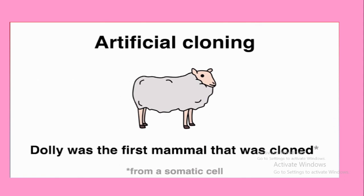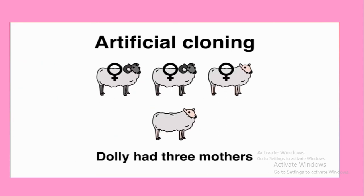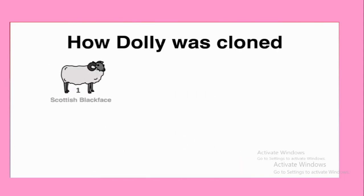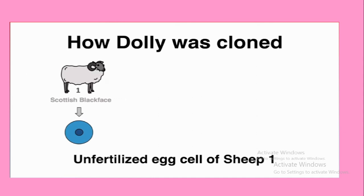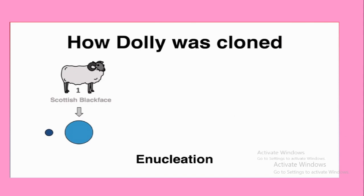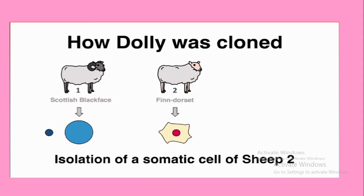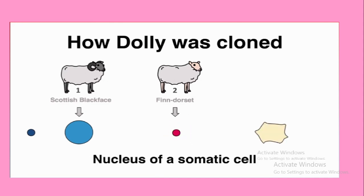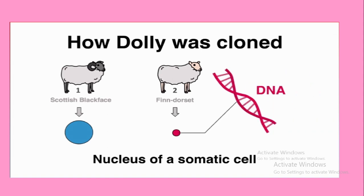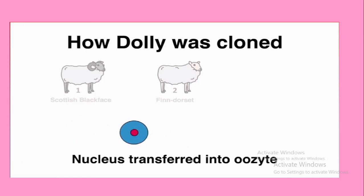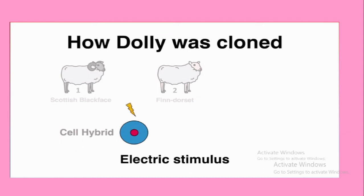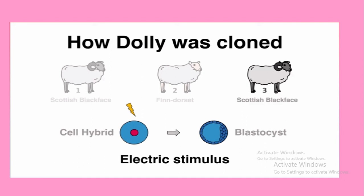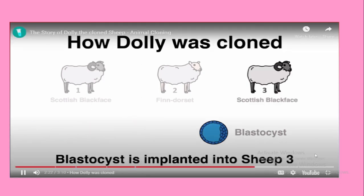Dolly did not have biological parents in the normal sense. This special sheep was brought into life by artificial cloning in 1996. Dolly had multiple mothers, each with one important function. Sheep one, a Scottish Blackface, was the egg cell donor — its nucleus was removed so that only the egg cell without any DNA remained. From sheep two, a different species, a somatic cell was taken and the nucleus isolated. This nucleus, containing all genetic information, was transferred into the enucleated oocyte, forming a hybrid cell. An electric stimulus triggered cell division.